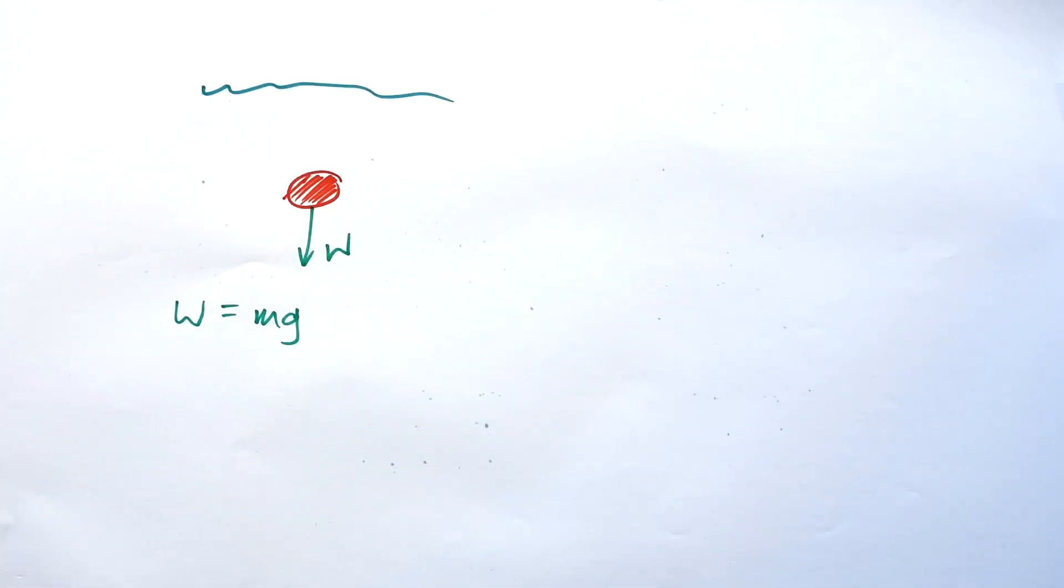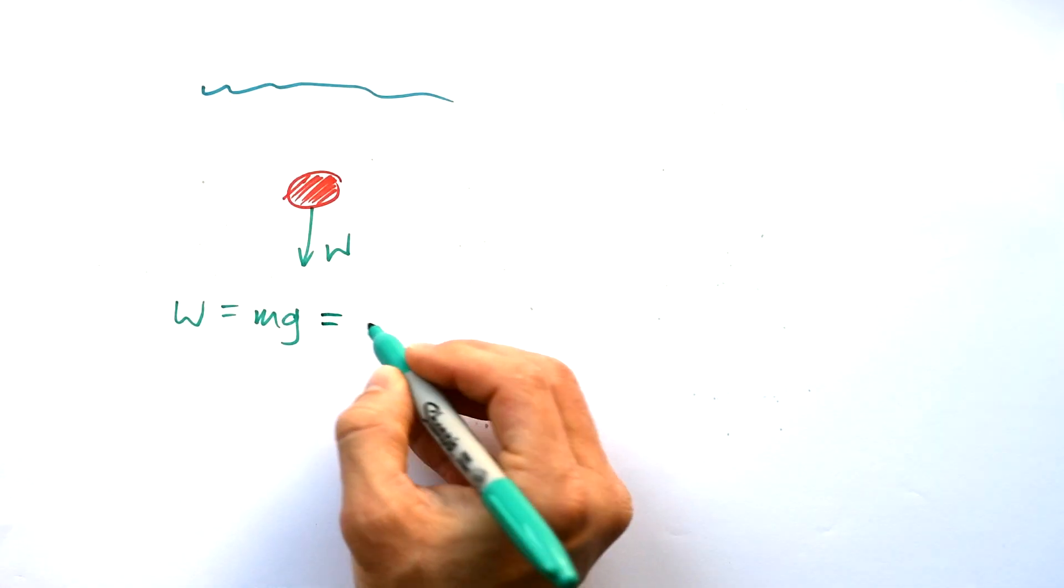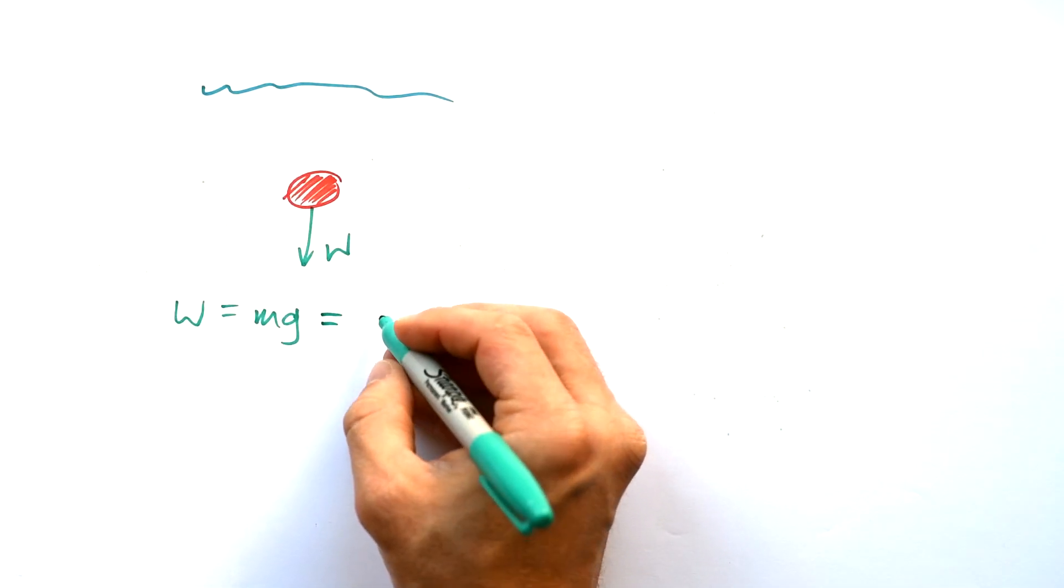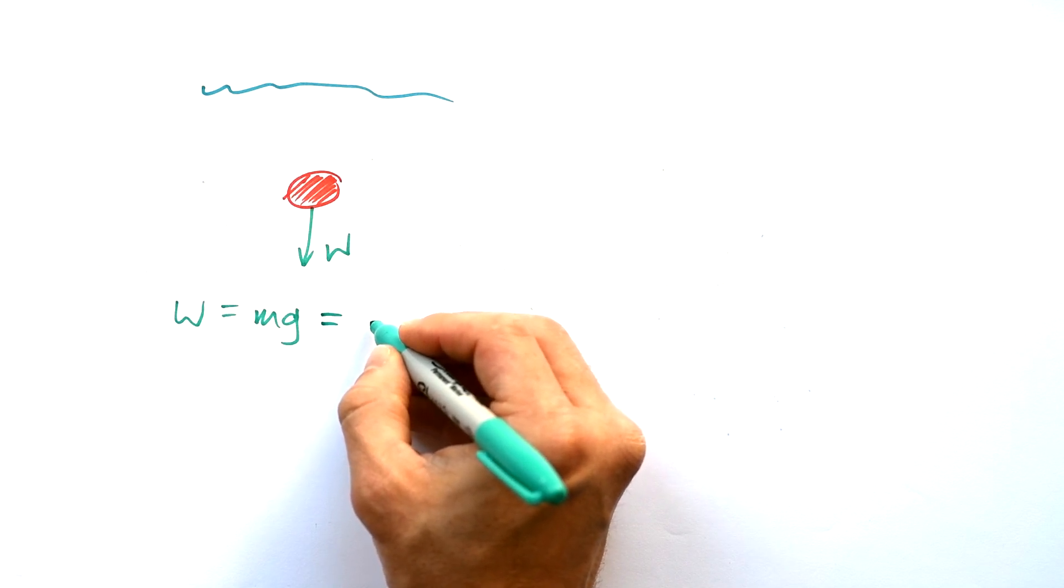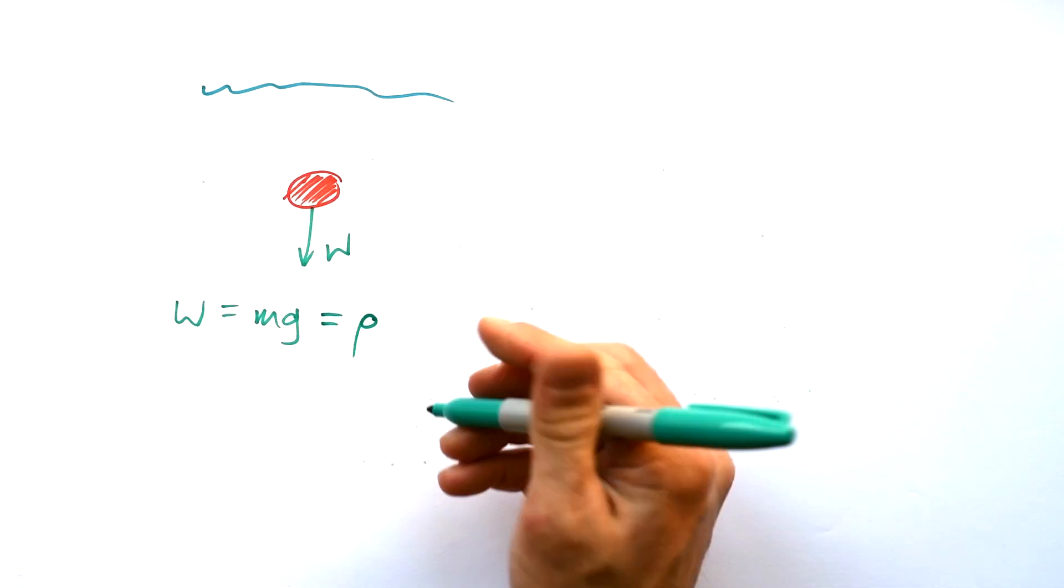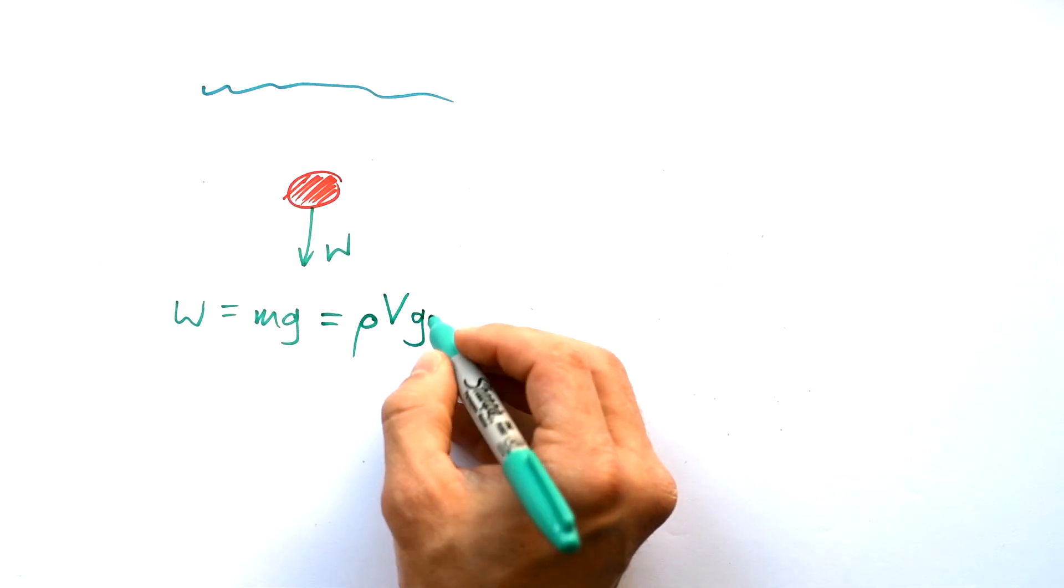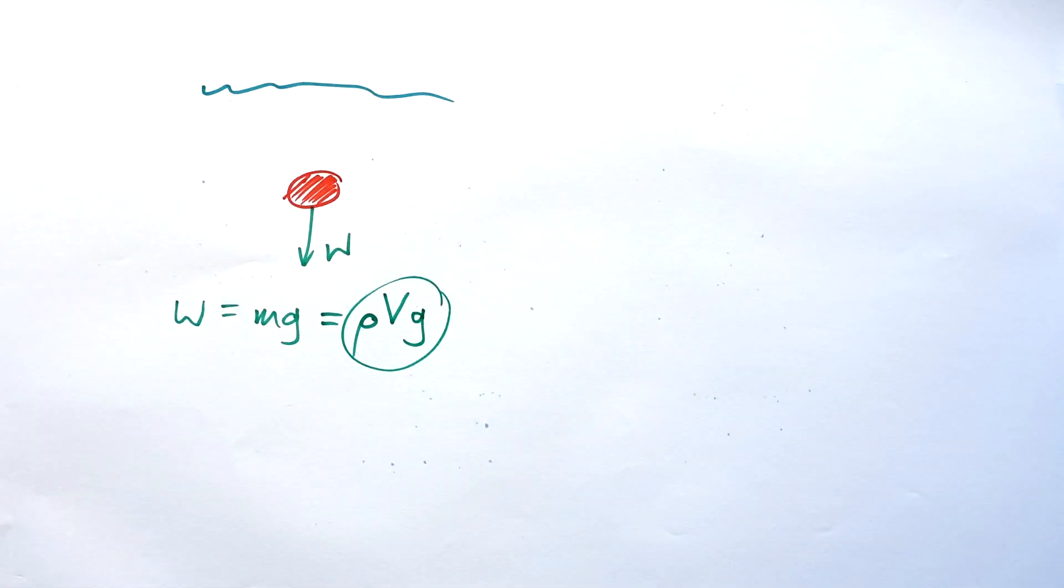Obviously, weight is equal to mg, mass times 9.8, times gravitational field strength. Often, though, we don't deal with masses. We deal with densities. Density is given by the letter rho. And we know that mass is equal to density times volume. Density being kilograms per metre cubed times by metres cubed, and that gives us kilograms altogether. So, therefore, weight is equal to ρVg.